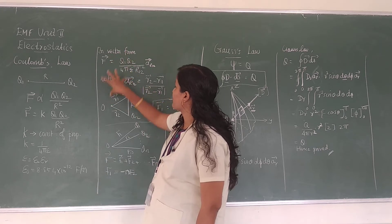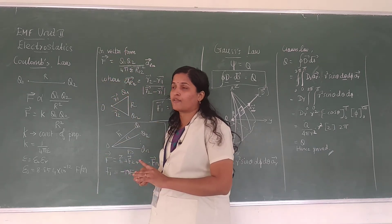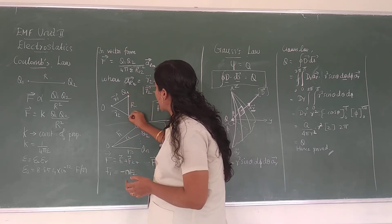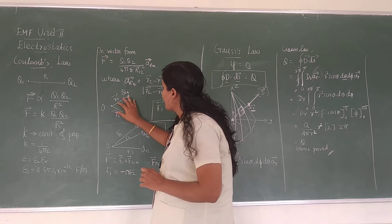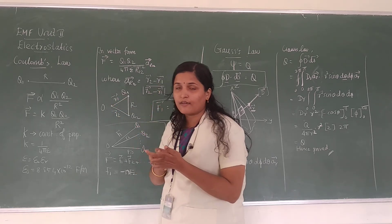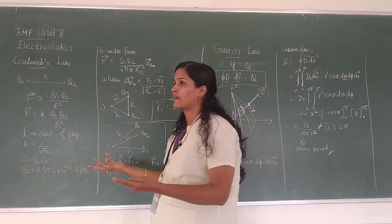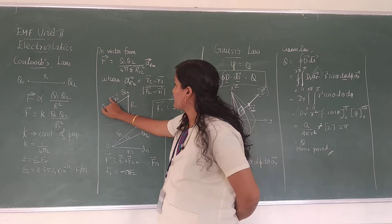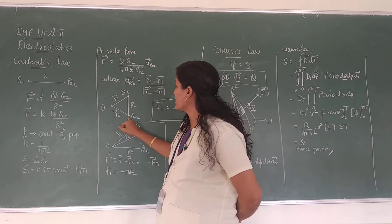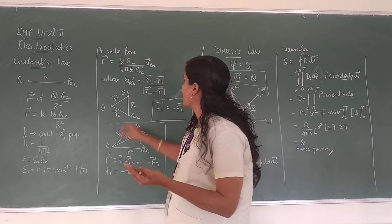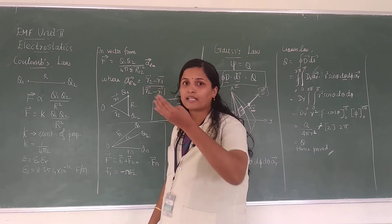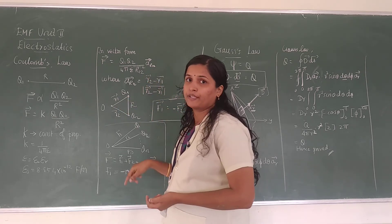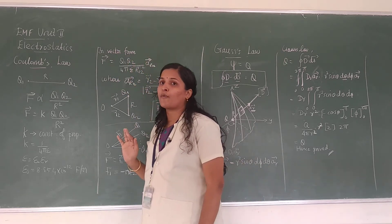The unit vector is identified from the diagram. Let Q1 and Q2 be two point charges separated by distance R. We calculate the position vectors from the origin: let R1 be the vector from origin O to Q1, and R2 be the vector from O to Q2. The unit vector is nothing but the vector divided by its magnitude — the vector being the difference R2 minus R1, divided by its magnitude. This is the vector form of Coulomb's law.